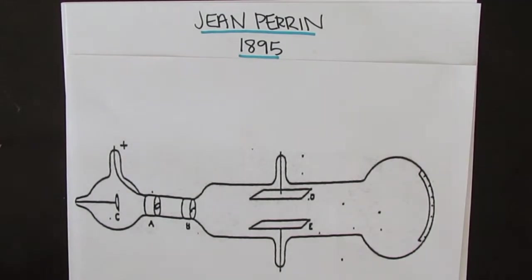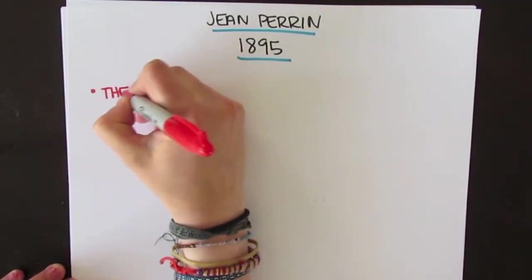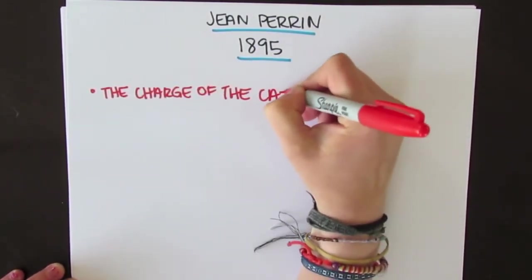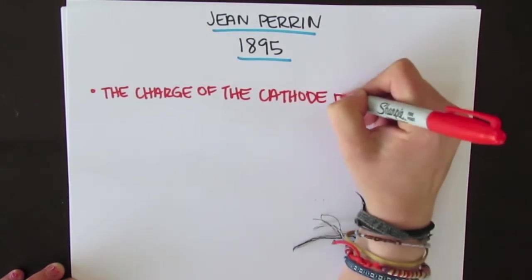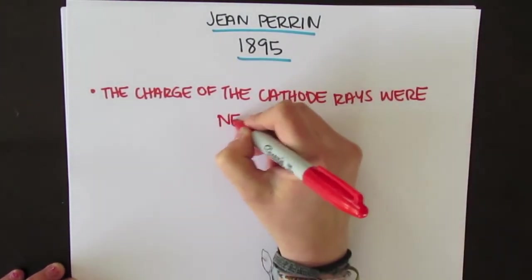Scientists during the 19th century were curious about the properties of a cathode ray. Jean Perrin constructed an apparatus made of a hollow aluminum cylinder that was open at both ends. Using an electroscope, he determined that the charge of the cathode rays were negative.